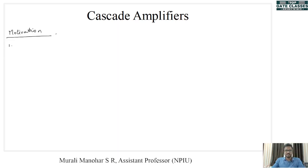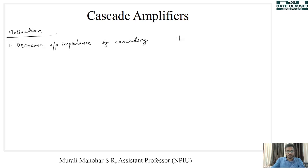The first motivation is that by cascading we can decrease the output impedance. For this we use a common collector amplifier at the output stage, that is as the second stage. So, we decrease output impedance by cascading with a common collector configuration.